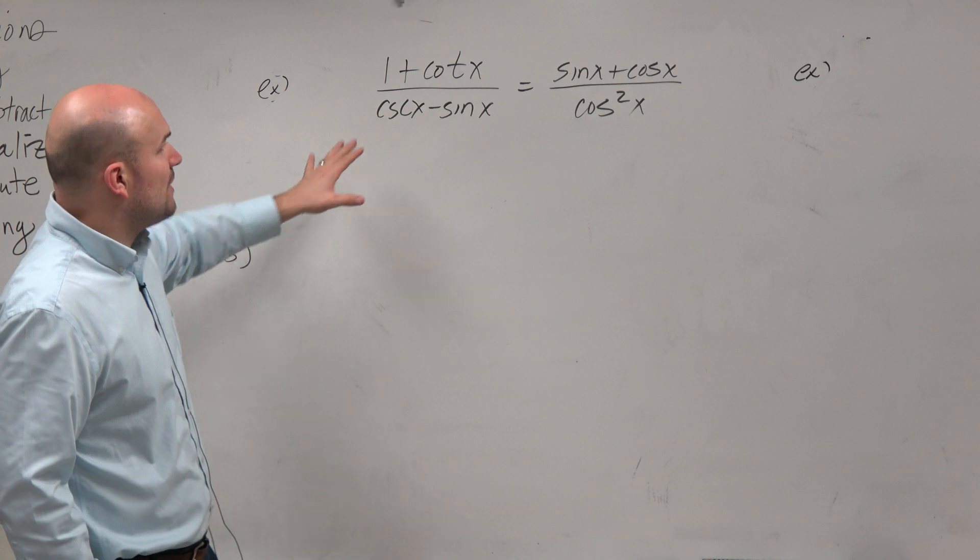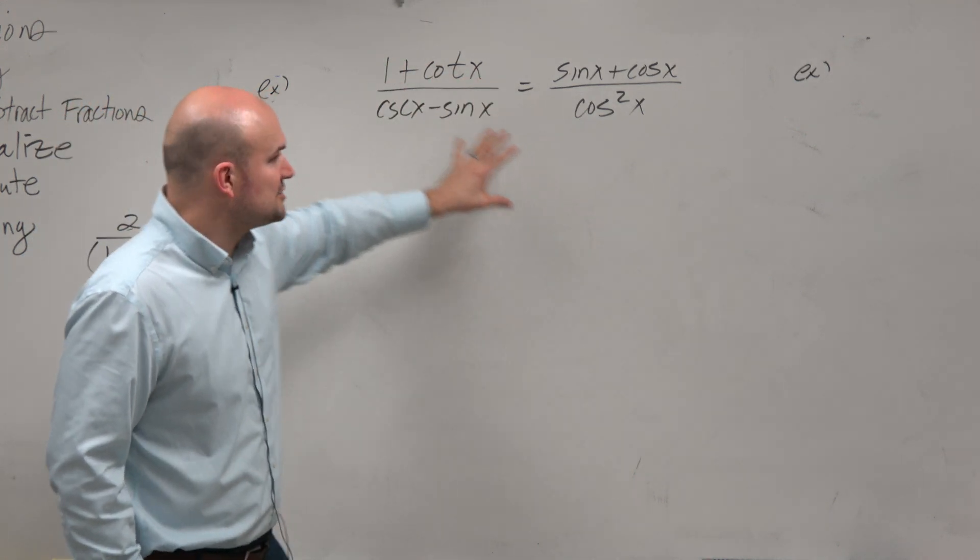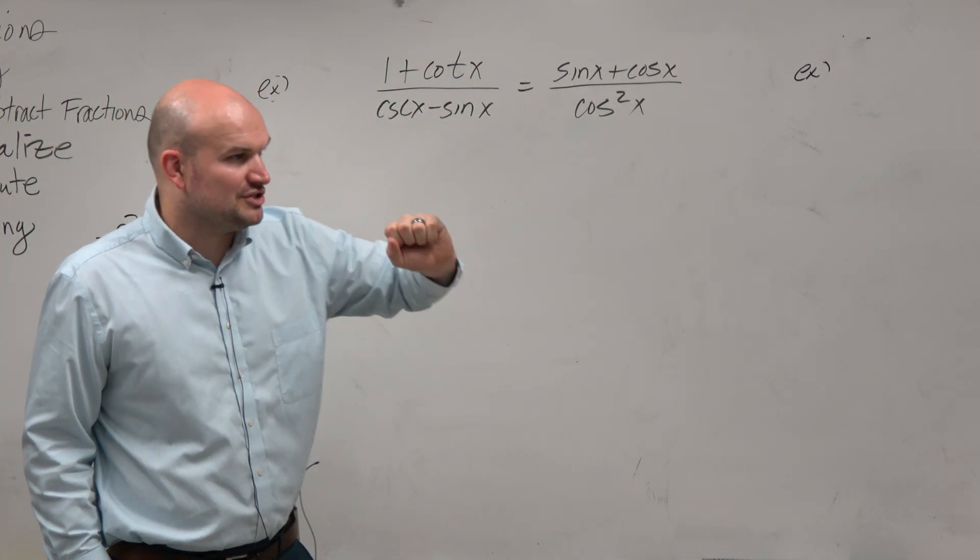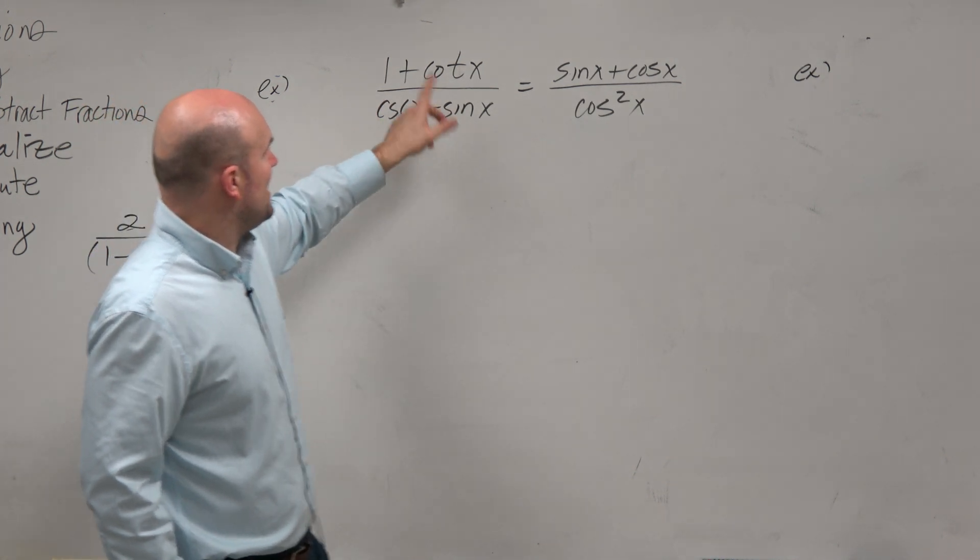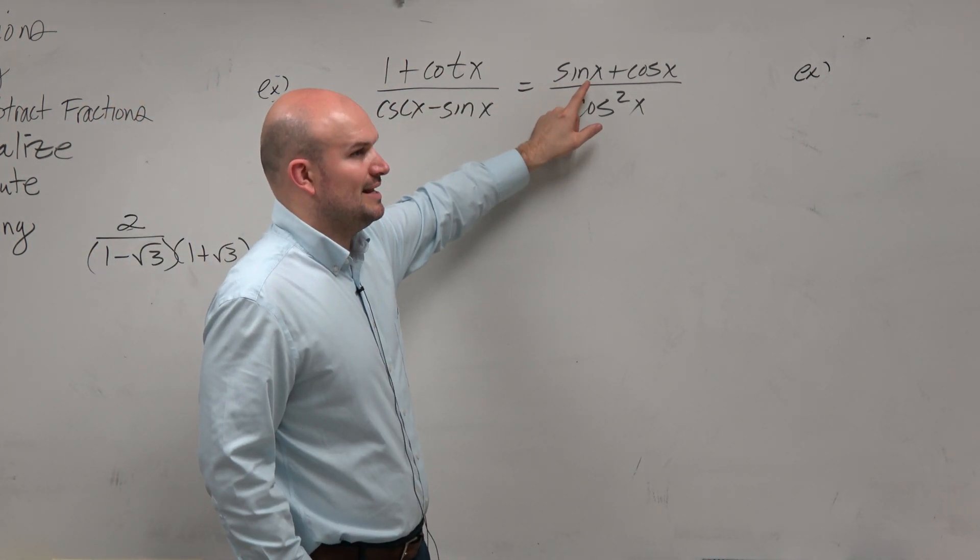So let's maybe think about, maybe rather than instead of multiplying by the conjugate and then combining fractions, is there maybe something we could just multiply by? Like for instance, if I have a 1 and I want to get it to sine, what would I need to multiply it by?